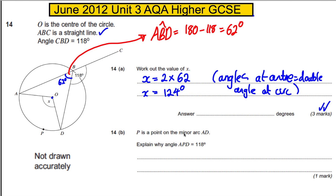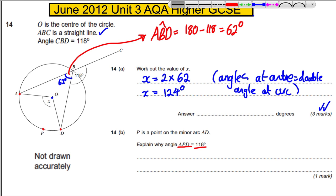We're told that P is a point on the minor arc of AD. The minor arc is the smaller of the two arcs between A and D. The question asks us to explain why angle APD is 118 degrees.